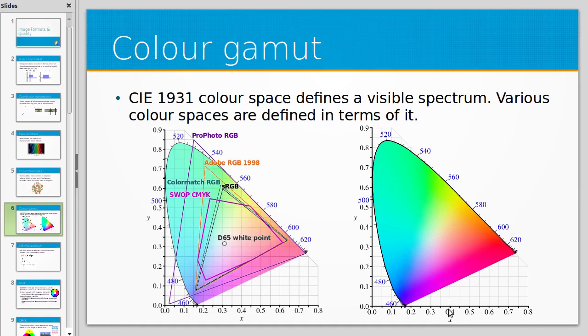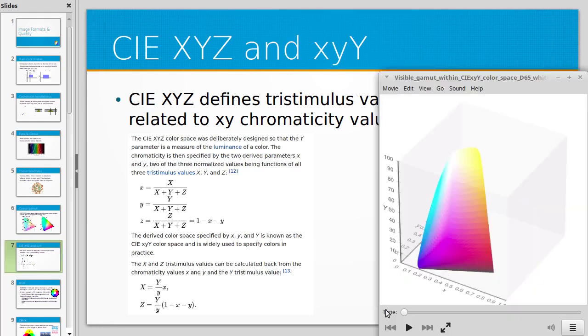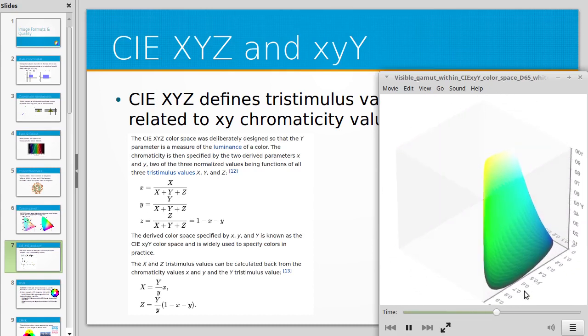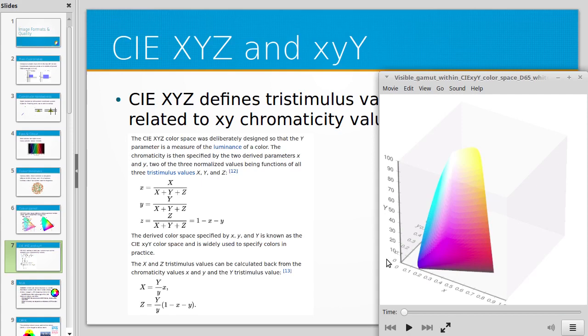You can see lowercase x on the bottom and lowercase y on the side. The capital Y on the side refers to luminance, which is a physical property—an objective measure of the amount of light going through a physical area, unlike the subjective term brightness. The CIE 1931 color space defines XYZ as a way of classifying colors.